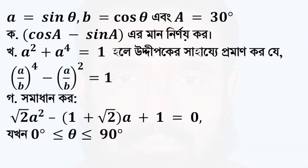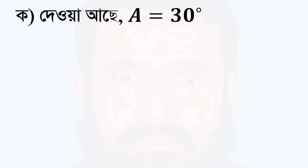First we have a equal to sin(qt), b equal to cos(qt). When a equal to 30 degrees, what is cos(30°) minus sin(30°)? Then we have cos(30°) minus sin(30°).